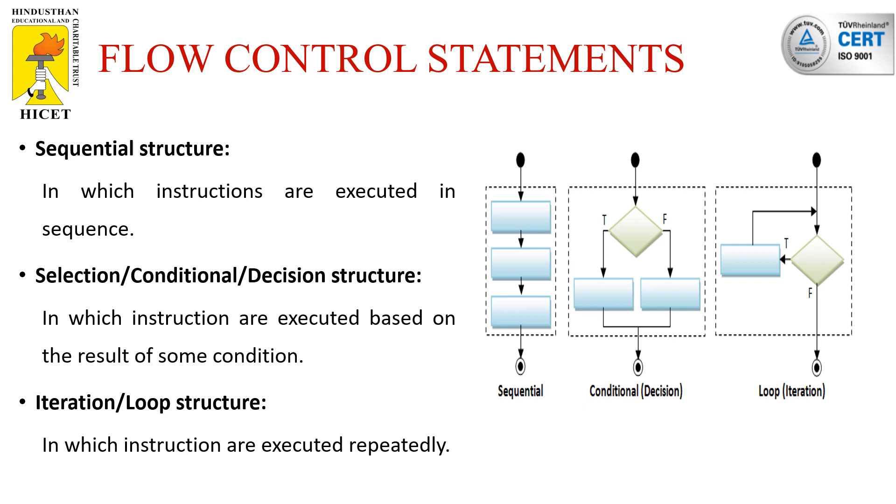In the sequential flow control statements, instructions are executed in sequence order. In the selection flow control statements, the instructions are executed based on the result of some condition. In iteration or looping structure, the instructions are executed repeatedly until some condition becomes false.